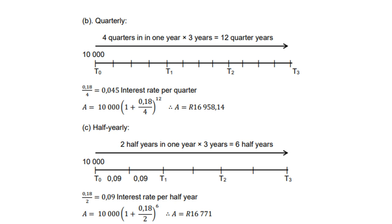For half-yearly compounding, there are two half-years in one year, so three years gives six half-years. The interest rate is divided by two, giving 0.09. Therefore A = 10,000 × (1 + 0.18/2)^6, and the answer is R16,771.